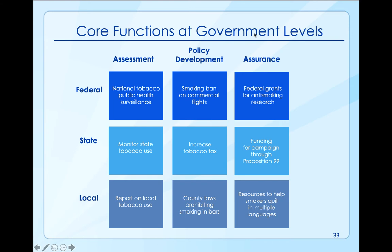When we look at the core functions of government, think about this. Assessment at the federal level - they might have tobacco health surveillance. Policy development might be the ban on smoking on flights, because that is federal level - it goes across all the United States. And assurance might be federal grants to do anti-smoking research. Or, if you smoke on a flight, you will get in trouble. Big time.